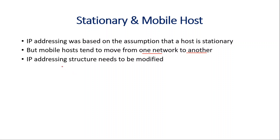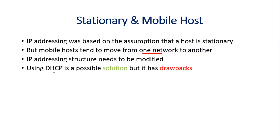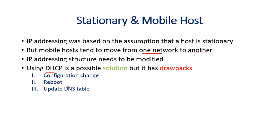In this case, the mobile IP addressing structure needs to be modified. Using a Dynamic Host Configuration Protocol, known as DHCP, is a possible solution, but it has some drawbacks. The first drawback is configuration change — when a mobile host moves from one network to another, its configuration needs to be changed and the mobile host needs to be rebooted. The next drawback is updating the DNS table and letting everyone on the internet know that the mobile host has moved. The last drawback is that constant communication is interrupted when a mobile host moves from one network to another.